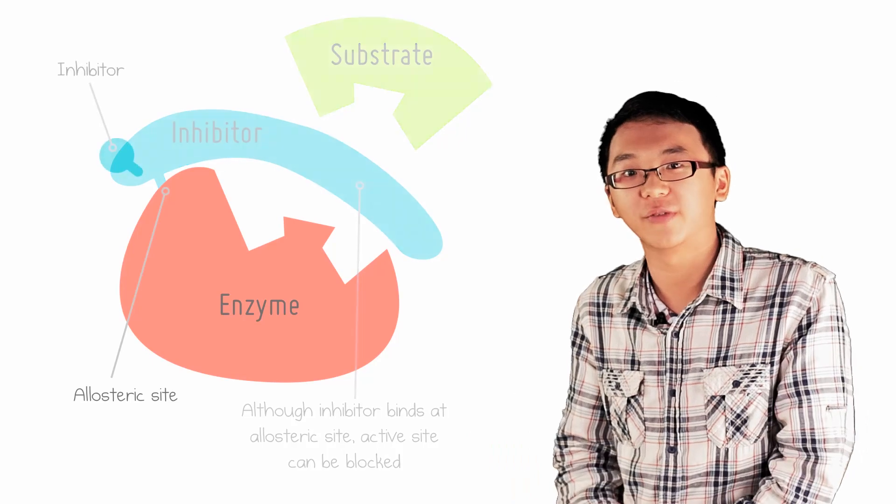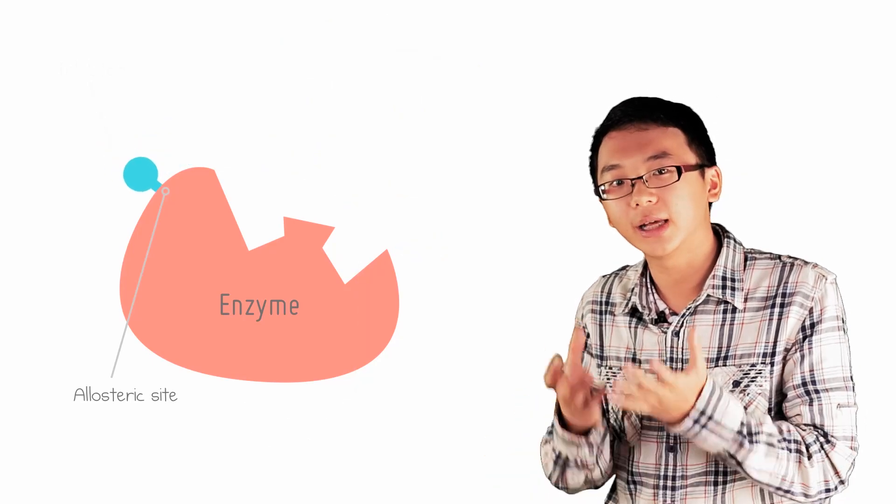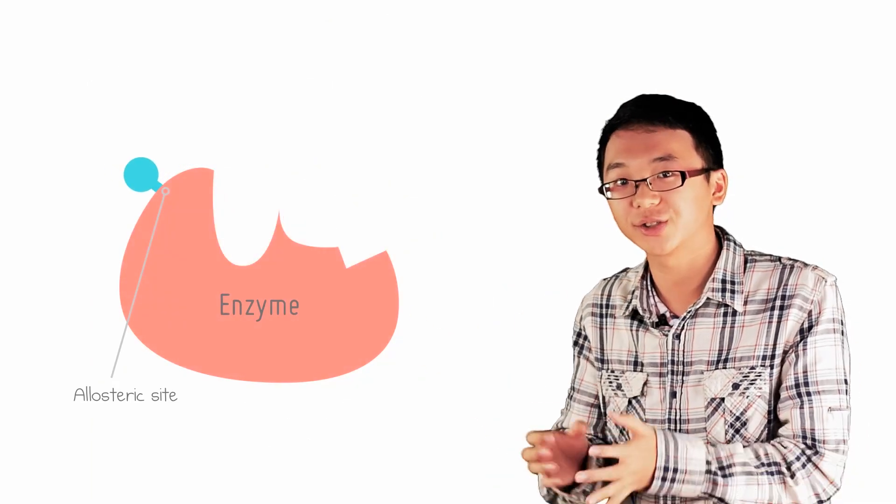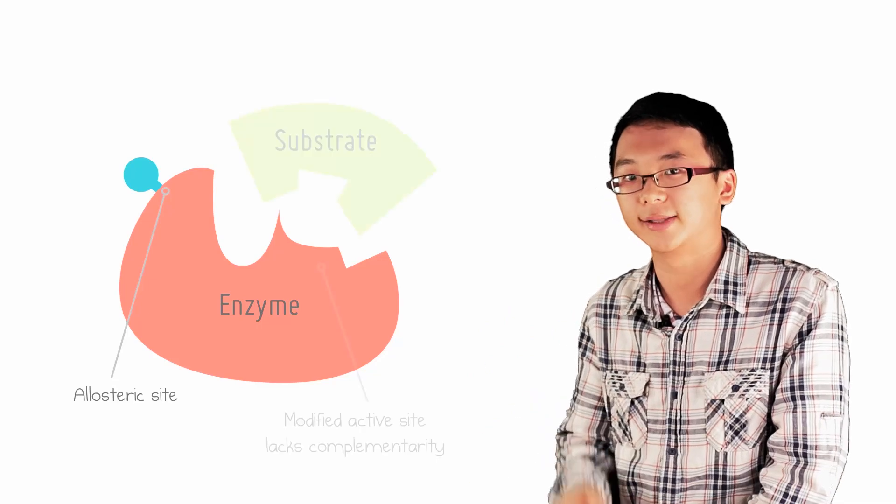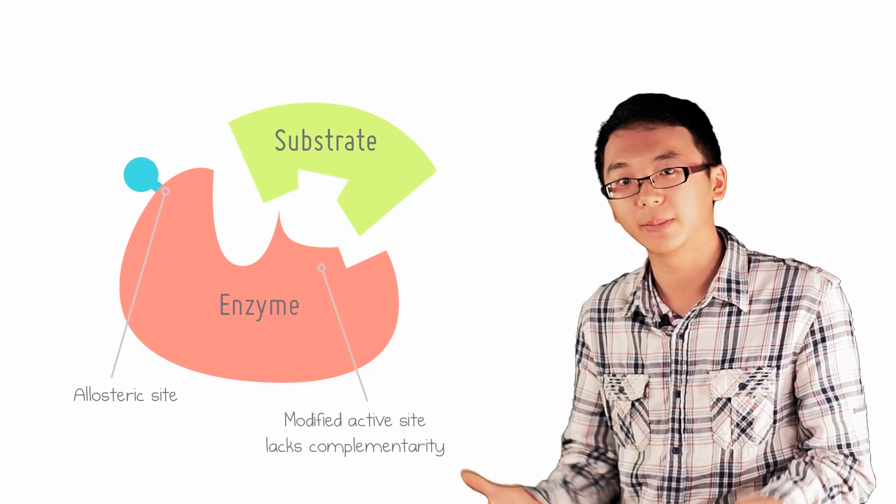Second is the modification of the active site. The binding of the inhibitor to the allosteric site changes the conformation of the molecule and its active site. In the case of inhibition, this makes the active site incompatible with the substrate.